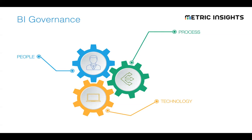Why is governance so hard? There are three gears that have to turn together in unison to make it work. You've got to have the right people in the right roles with the right responsibilities. They have to be given a process that really works within your governance framework. And then you have to have technology that meshes with the people and process to enable that process to be executed effectively. If any one of these gears does not turn or doesn't fit with the rest, the whole machine will not work and the governance initiative will fail.